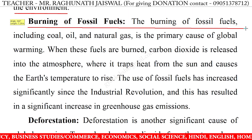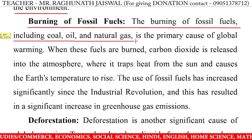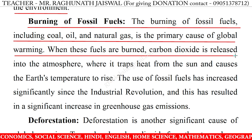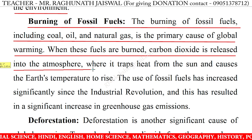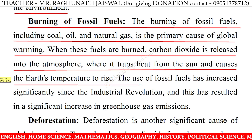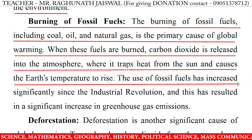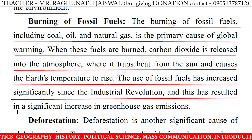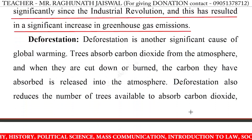Burning of fossil fuels. The burning of fossil fuels including coal, oil and natural gas is the primary cause of global warming. When these fuels are burnt, carbon dioxide is released into the atmosphere where it traps heat from the sun and causes the earth's temperature to rise. The use of fossil fuels has increased significantly since the industrial revolution and this has resulted in a significant increase in greenhouse gas emissions.